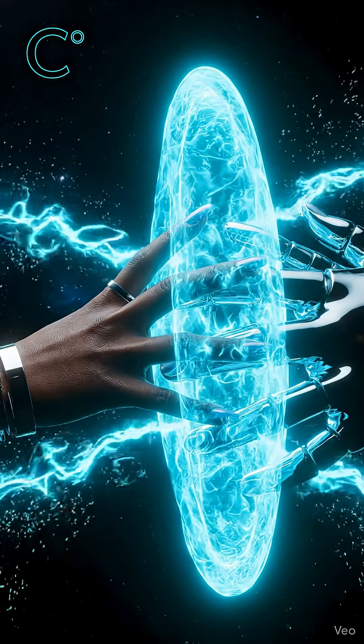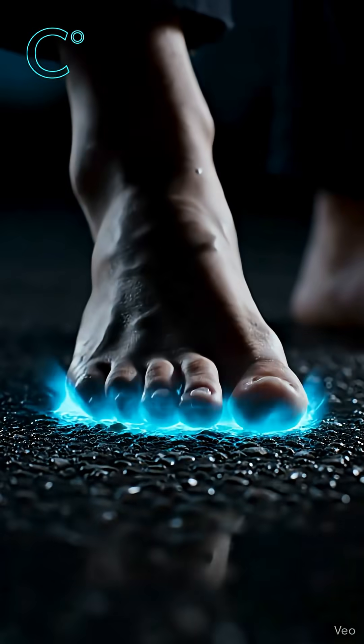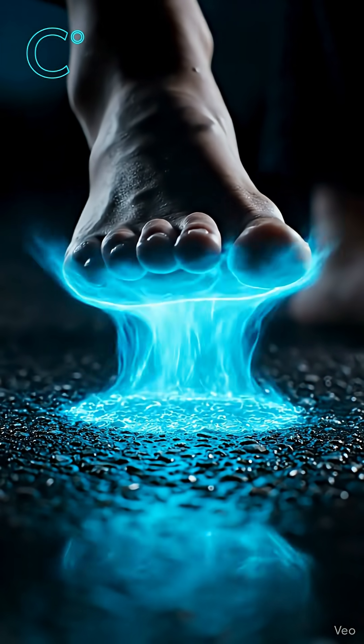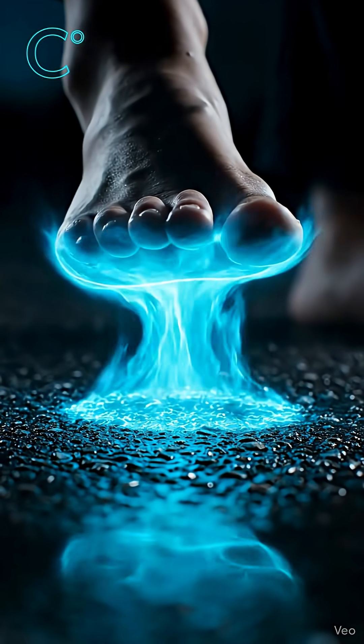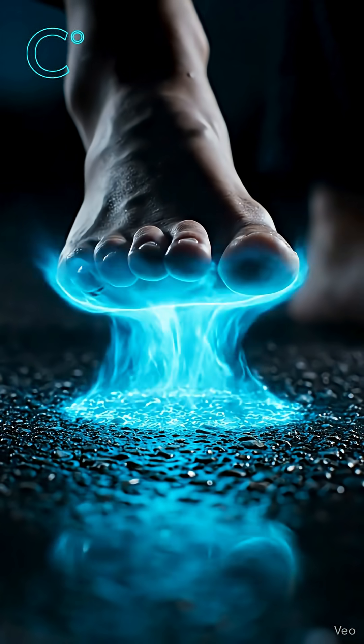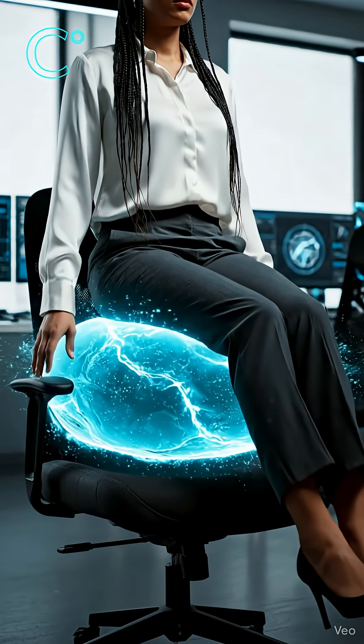When your hand goes near a surface, the electrons in your skin get so close to the electrons in the object that they violently push apart. That pressure is what your brain interprets as touch.